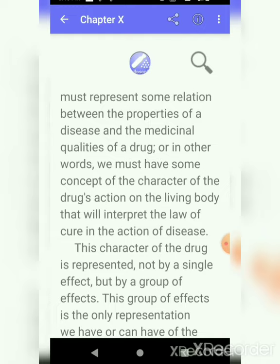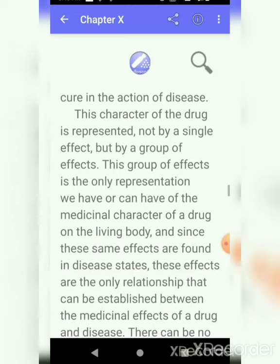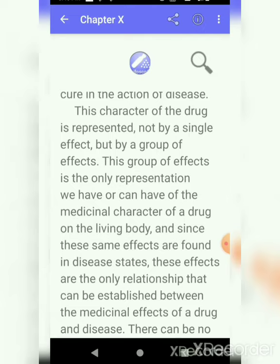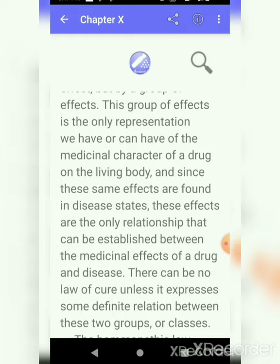We have some concept of the character of the drug's action on the living body — that is our drug proving. This character of the drug is represented not by a single effect but by a group of effects. This group of effects is the only representation we have. These same effects are found in the disease state. There can be no law of cure unless it expresses some definite relation between these two groups. The law of cure will only work when it forms a definite relation between the drug and the disease condition.